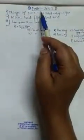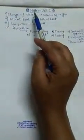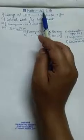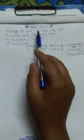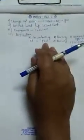Okay students, this is the second unit about the change of state. This unit is based upon a few definitions, but now I shall tell you how the change of state actually occurs, and I will explain it on the basis of the kinetic model.